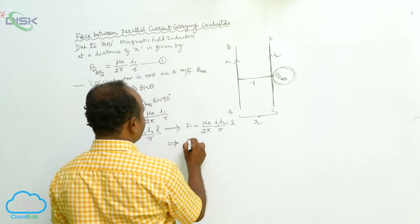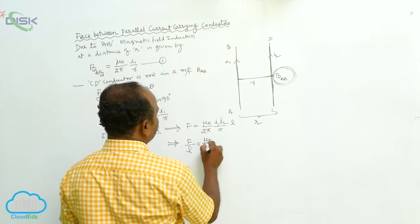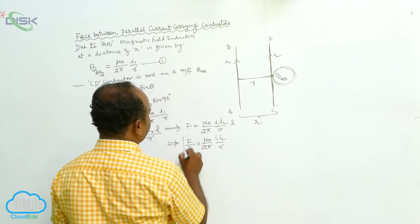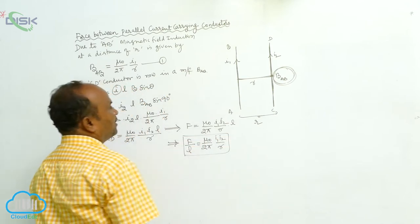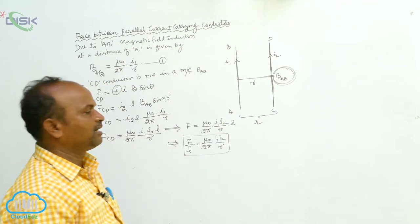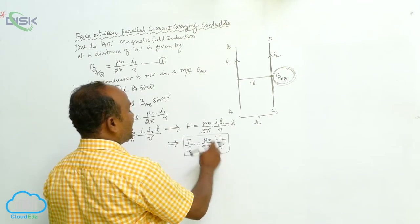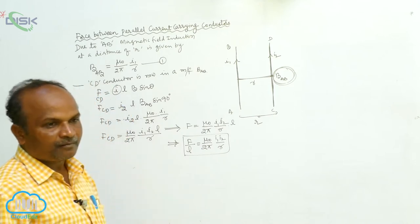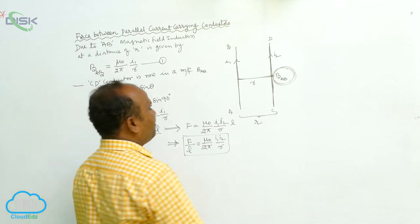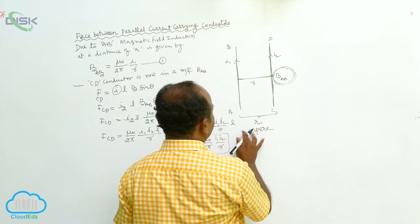The force per unit length is F/L = μ₀/2π × I1·I2/R. When the currents are in the same direction, there is an attractive force. When the currents are in opposite directions, there is a repulsive force. Using this formula, Ampere is defined.